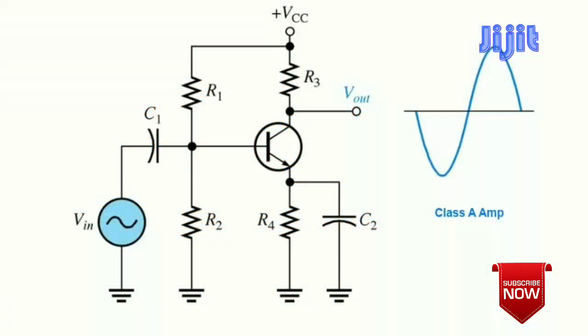You can see the flow of current throughout the signal. It is not interrupted — the current flows continuously and the current is the signal.